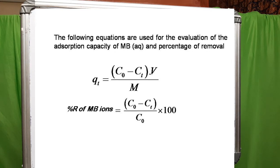The percentage removal was calculated by the following formulas. Qt equals (C0 minus Ct) multiplied by V divided by M, where C0 is the initial concentration, Ct is the final concentration, V is the volume of solution, and M is the mass of adsorbent. Similarly, percentage removal of methylene blue ions equals (C0 minus Ct) divided by C0, multiplied by 100.